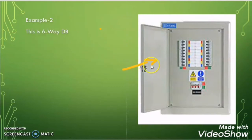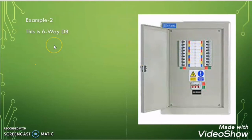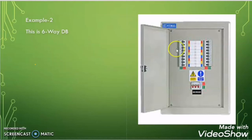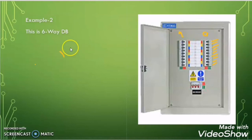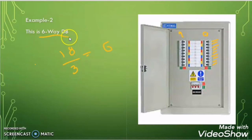Let us take another example. It is a way type DB enclosure because the breakers are arranged in a vertical pattern, unlike the row type. To find whether it is a 4 way, 6 way, 8 way, 12 way, 20 way, or 24 way DB, we count the breakers. Counting gives 9 on one side plus 9 on the other side, totaling 18 breakers. Dividing by 3 gives 6. So it is a 6 way DB.